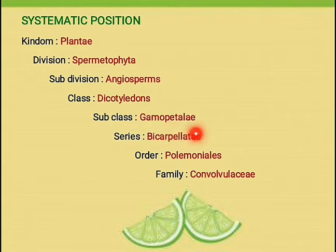Next, series Bicarpellatae: superior ovary is present, carpels usually present in the number two. Stamens alternate with corolla lobes and equal in number. Next, order Polemoniales. The order Polemoniales is characterized by regular corolla with five lobes and five alternate stamens present. Next, family Convolvulaceae.